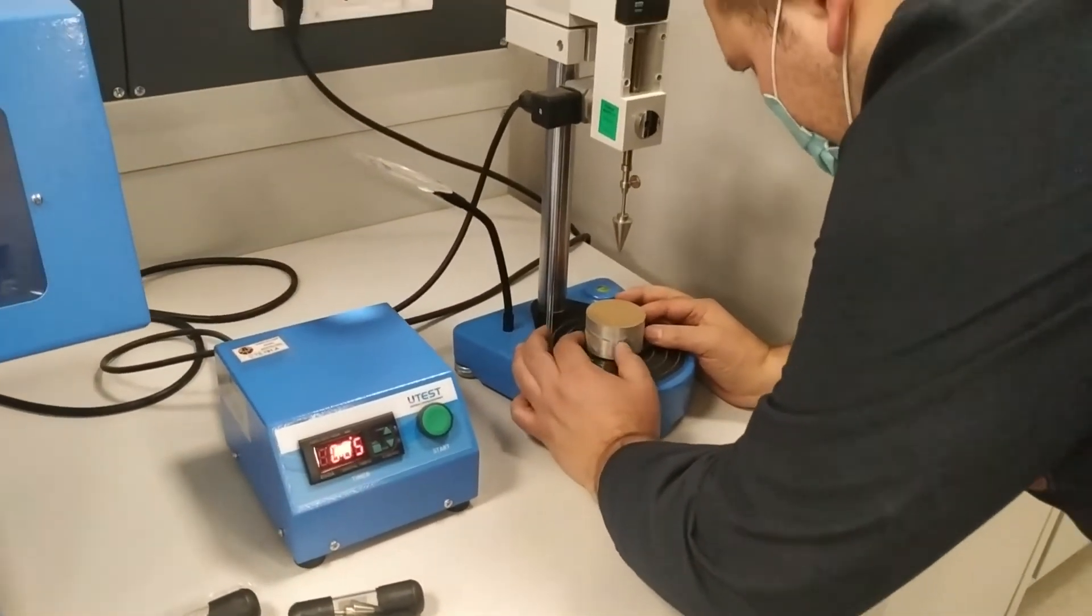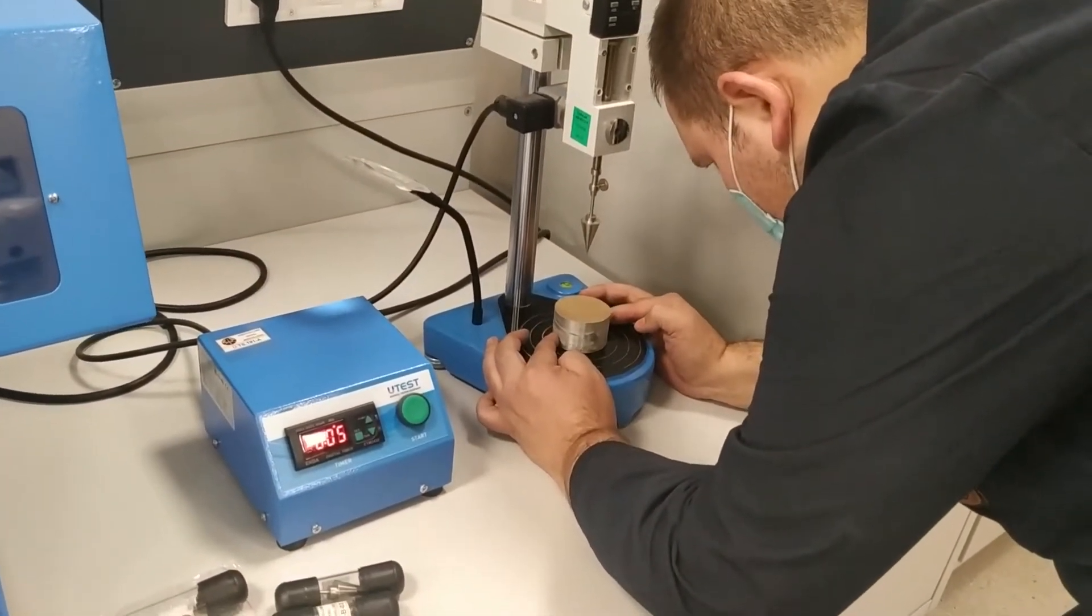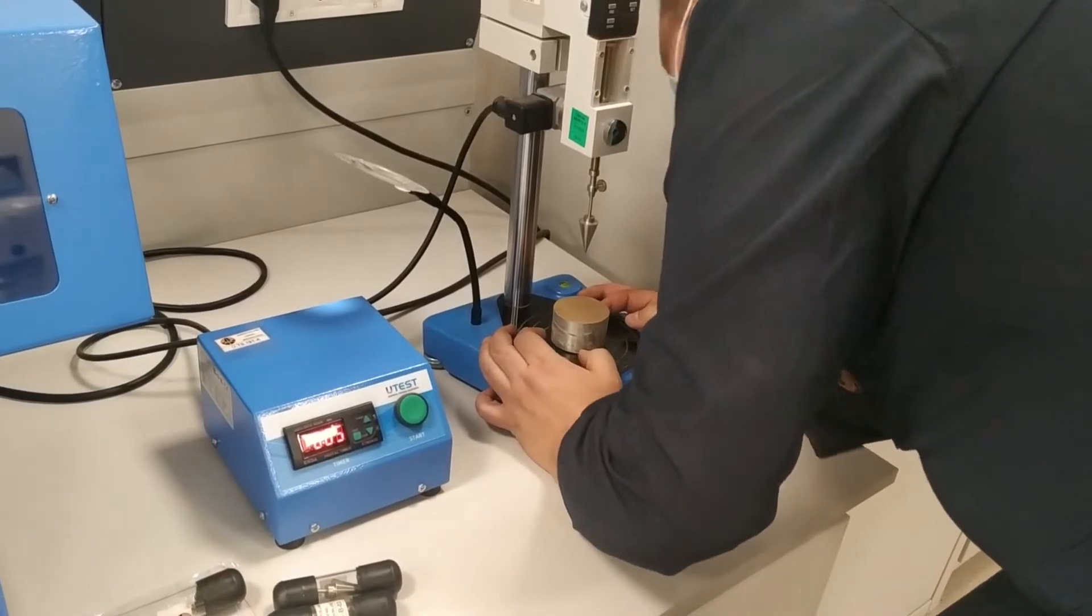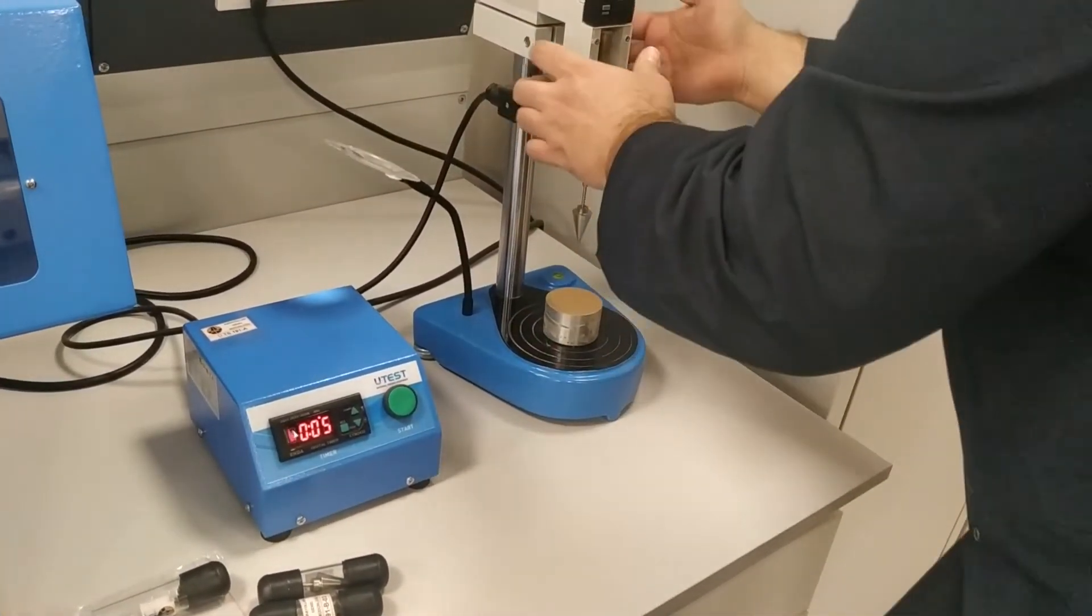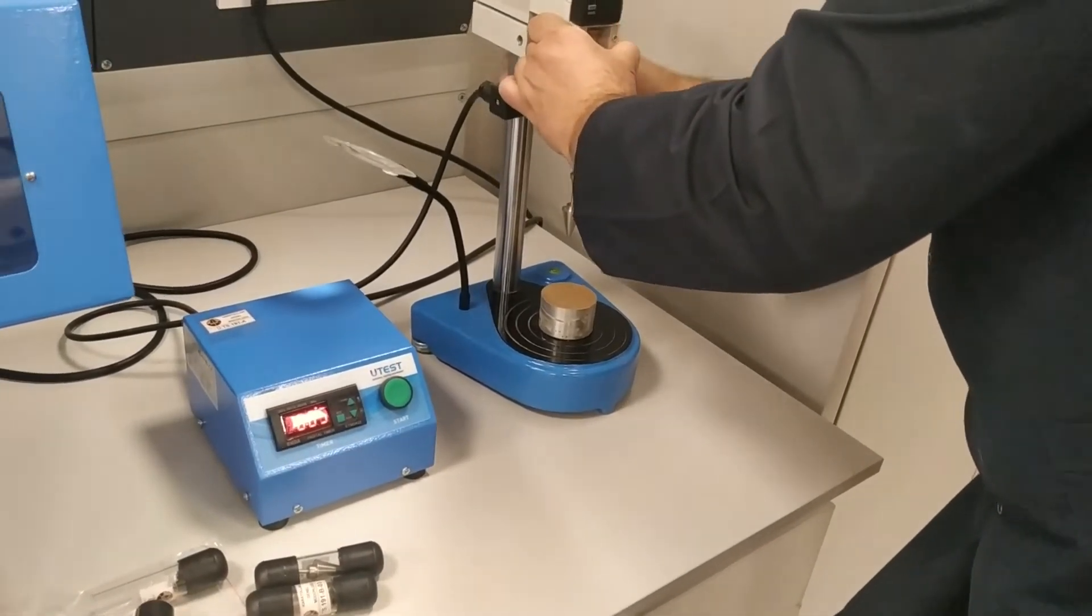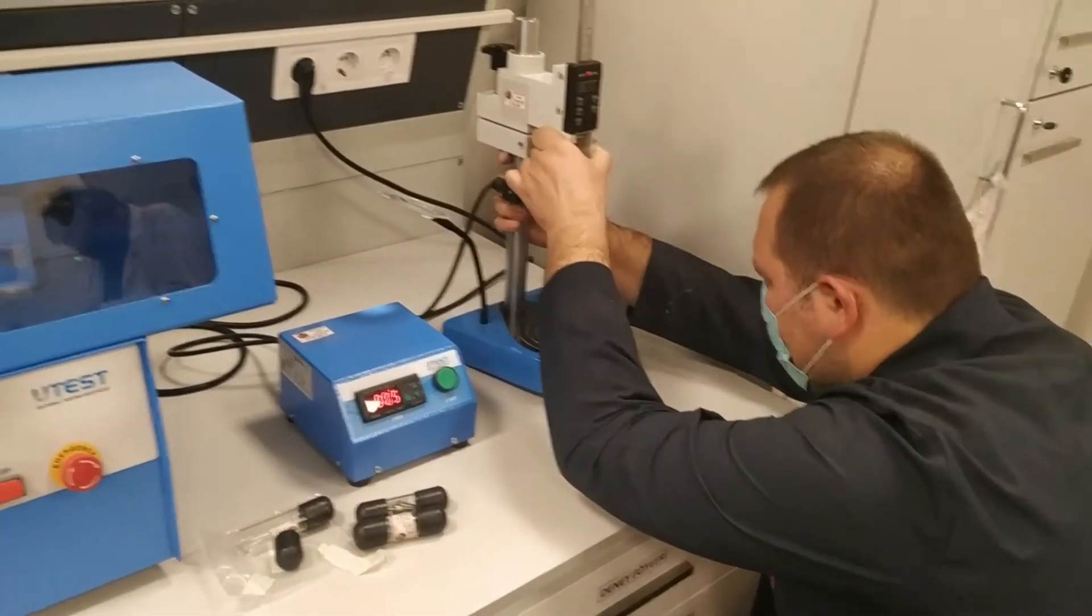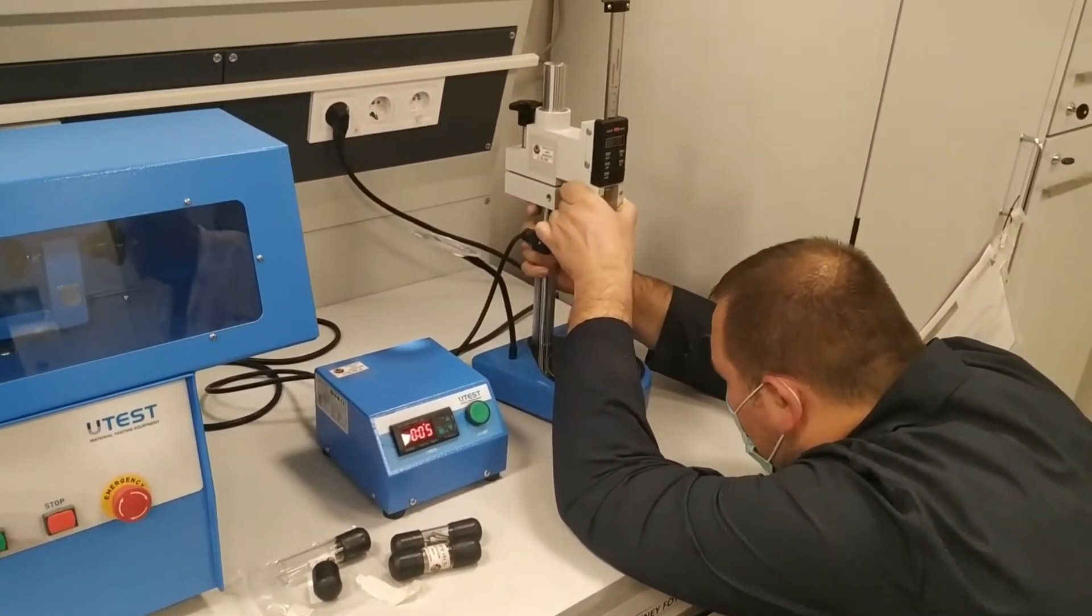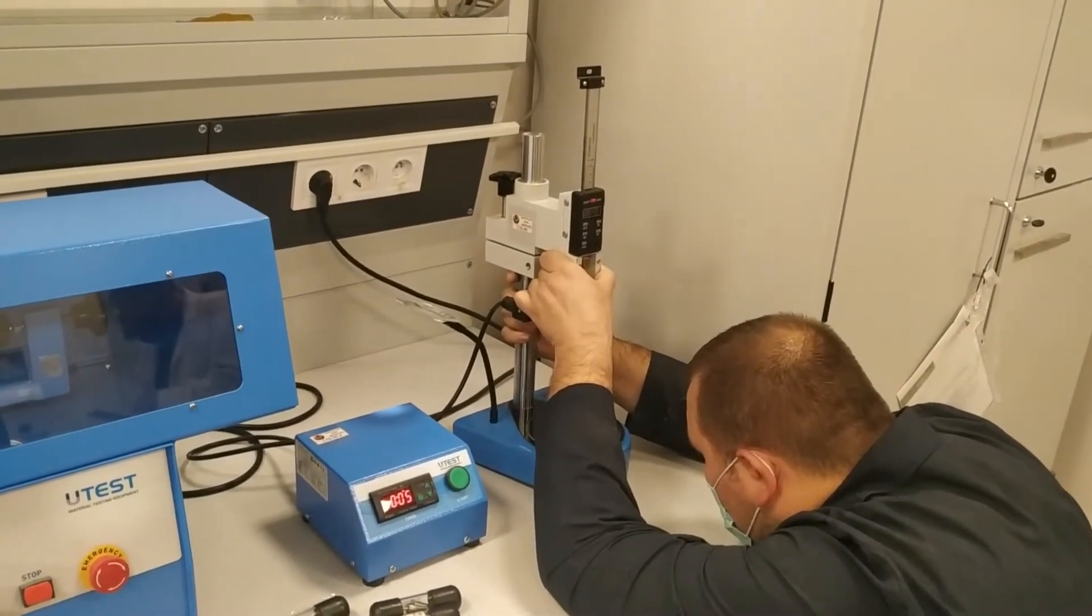The calibration of the cone must be made. The fall cone apparatus has a vertical adjustment mechanism which allows the cone to be adjusted so that the tip of the cone just touches the surface of the specimen before the cone is released. The apparatus also has a mechanism for measuring the penetration of the cone into the specimen after it is released.